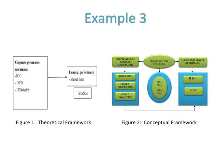In example three, there are two figures from studies about the impact of corporate governance on financial performance. The first article, 'Corporate Governance Mechanisms and Jordanian Companies Financial Performance' by Alabdulla Eyal in 2014, is based on theoretical framework, while the second article, 'Corporate Governance Mechanisms and Financial Performance of Listed Firms in Nigeria: A Content Analysis' by Peters and Bagshaw in 2014, is based on conceptual framework. It is your decision to use either in your research.